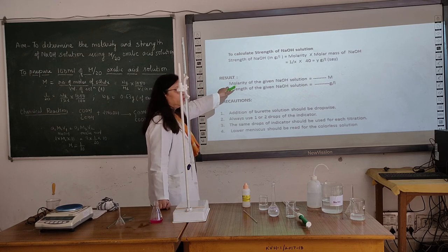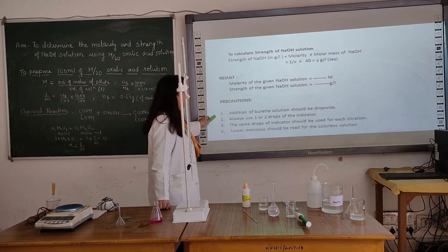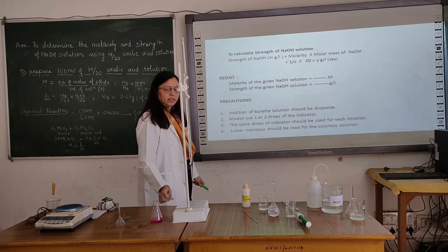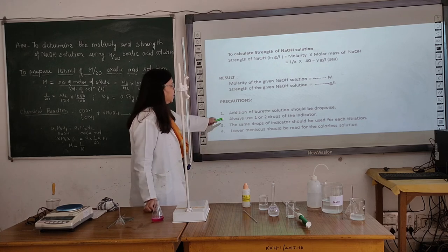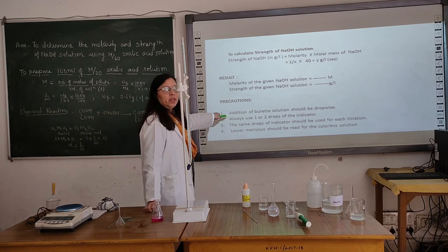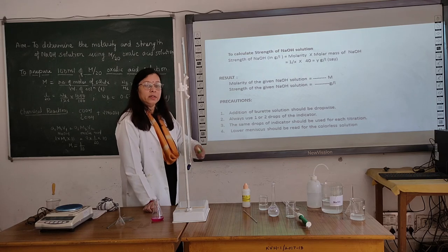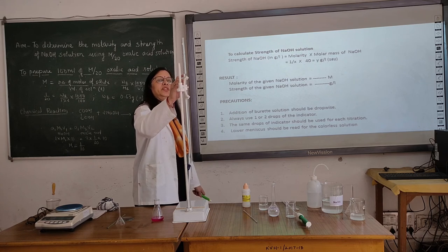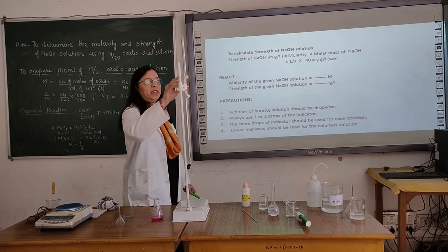We write the result: the molarity of the given NaOH solution and also the strength of the given NaOH solution with proper units. Precautions: addition of NaOH solution should be drop-wise — otherwise we will get a dark pink color. Always use 1 to 3 drops of indicator and never use more. For every reading, the same number of drops of indicator should be used. The lower meniscus should be read for colorless solutions — whatever reading we measure, the lower meniscus should touch that particular mark.